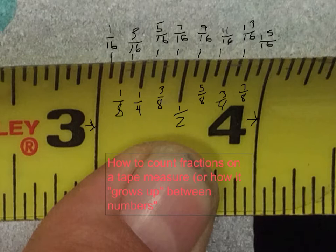So on this tape measure between the 3 and the 4, I could just count each of these little lines by sixteenths: 3 and 1 sixteenths, 3 and 2 sixteenths, 3 and 3 sixteenths, 3 and 4 sixteenths, or